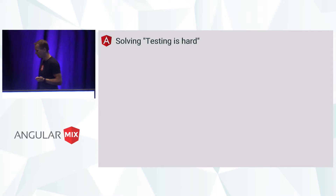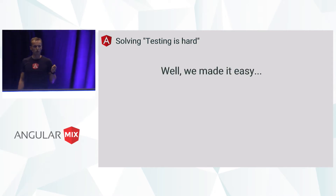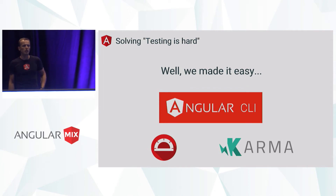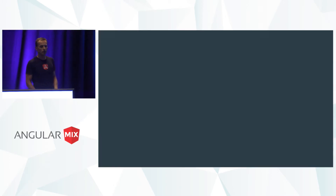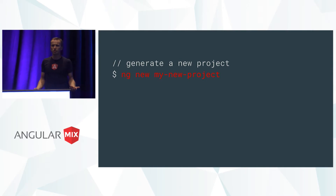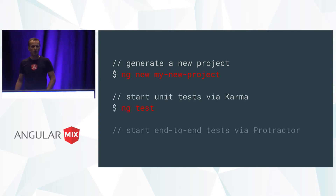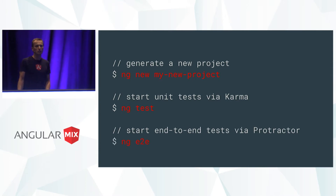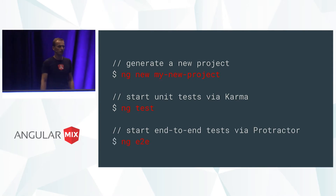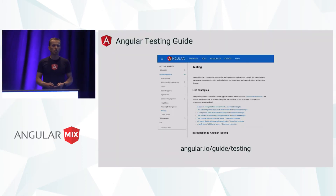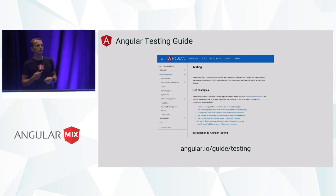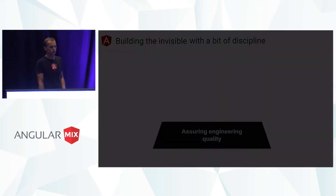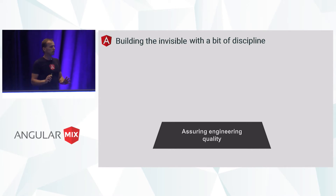Some people argue that testing is hard. Well, we actually made it quite easy. If you use Angular CLI, it comes with scaffolding that sets up your project. You have Karma and Protractor set up for your testing. You just generate the project using NG New, run NG Test to start your unit testing setup, or run NG E2E to run your end-to-end testing with Protractor. There's nothing else you need to do to get started. When you want to learn how to write good tests, you can go to the testing guide for a walkthrough. So that covers the basic foundation. Once we have this, we know we can iterate in a project and move on.